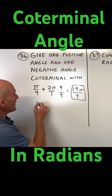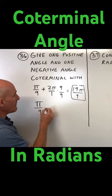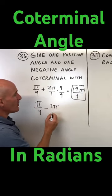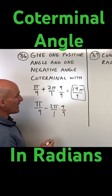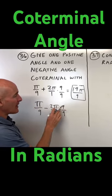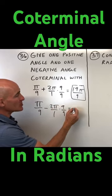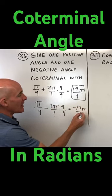And then if we want to do a negative angle, we're going to take pi over 9 minus 2 pi, again multiply the numerator and denominator by 9, so this is 1 pi minus 18 pi, which is negative 17 pi over 9.